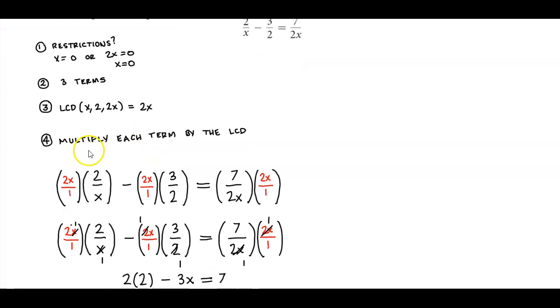Number four, we're going to multiply each term by the LCD. So the original equation has 2 over x minus 3 over 2, which is equal to 7 over 2x. And since they're all fractions, we write the LCD as 2x divided by 1. So we're going to multiply the LCD by each term.